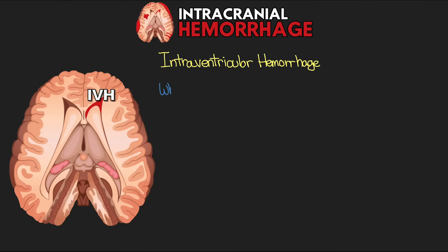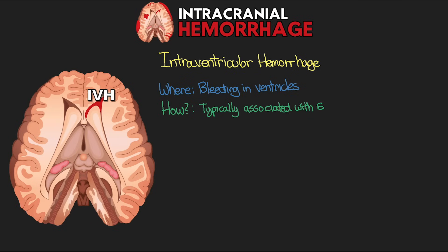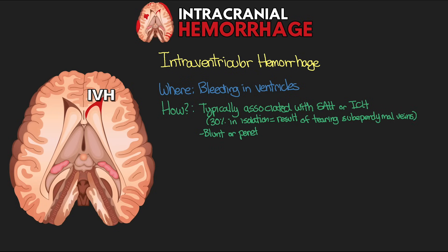Moving on to intraventricular hemorrhage — bleeding inside the ventricle system. These bleeds are typically associated with traumatic subarachnoid hemorrhage or intracerebral hemorrhage, but 30% are primary. In isolation, they most often result from tearing of the subependymal veins in the fornix, the septum pellucidum, or the choroid plexus, from either severe blunt trauma or penetrating injury, as well as diffuse axonal injury, deep gray matter injury, or brain stem contusion.